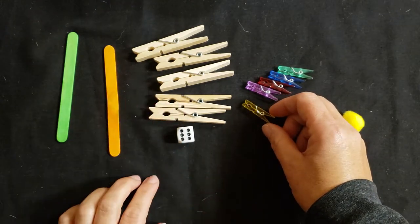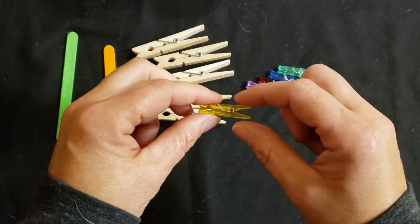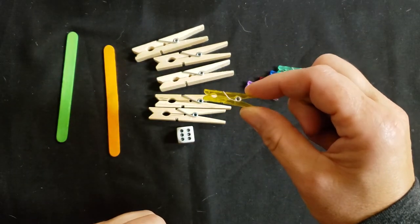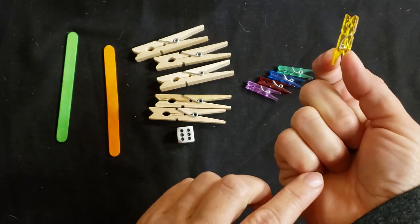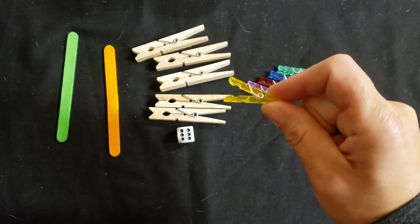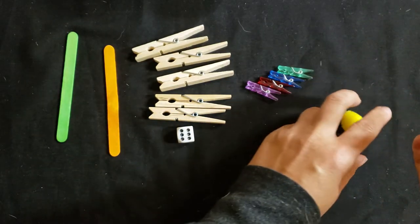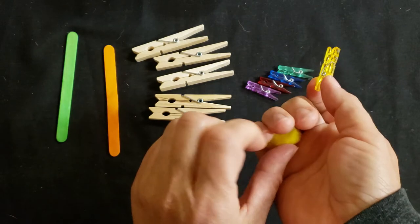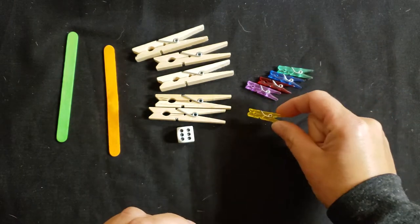For the mini clothespin, use your thumb and pointer finger to squeeze and open it. Your other fingers stay tucked into your palm. If it's difficult to keep those fingers tucked, you can hold something small like a pom-pom with those fingers, and that can help.